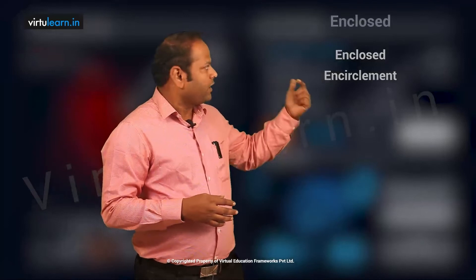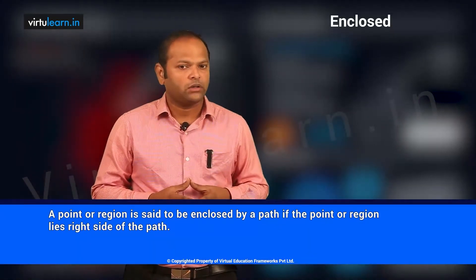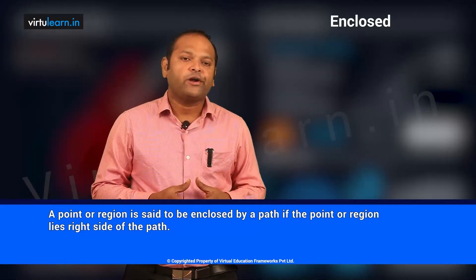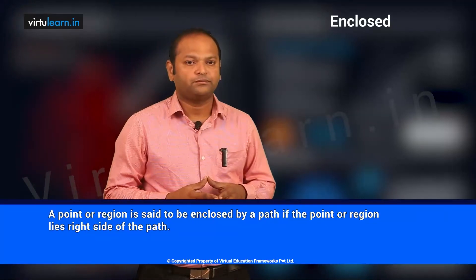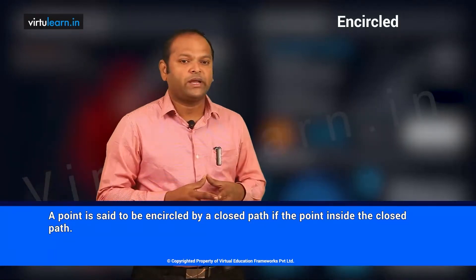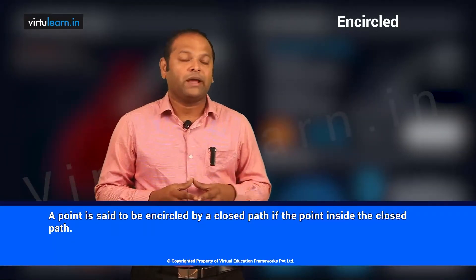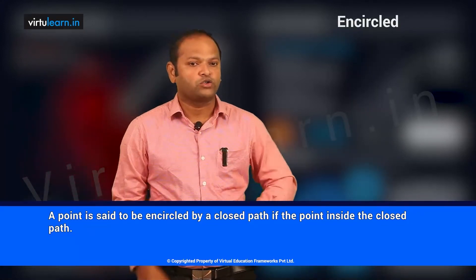Let us look at two definitions: one is called 'enclosed' and the other is 'encirclement.' A point or region is said to be enclosed by a path if the point or region lies on the right side of the path. A point or region is said to be encircled by a closed path if the point or region lies inside the closed path.